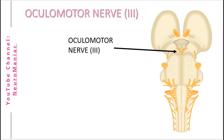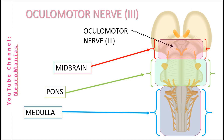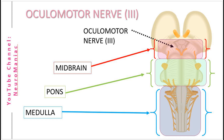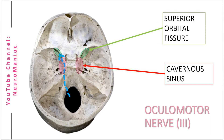Let's move on to cranial nerve number 3, the oculomotor nerve. The nerve originates from the midbrain region of the brainstem, but to be more precise, the oculomotor nucleus. One pathway of interest is where it follows the lateral wall of the cavernous sinus and exits the superior orbital fissure of the cranial cavity.